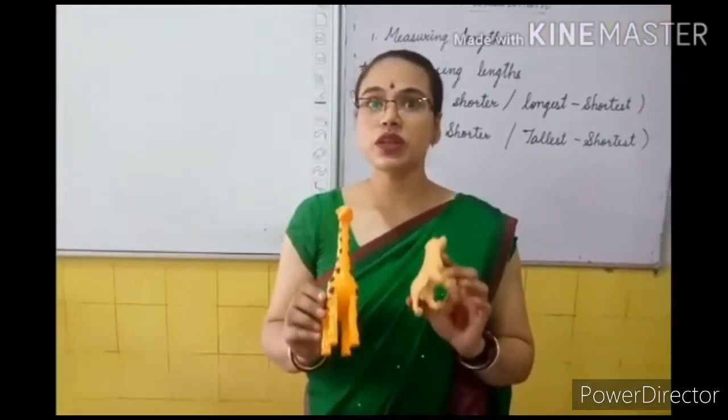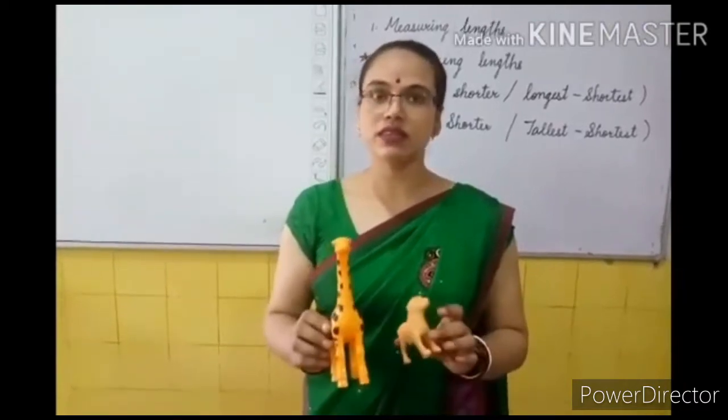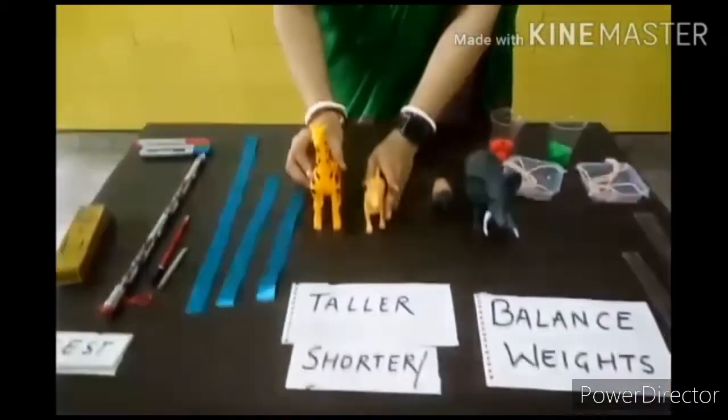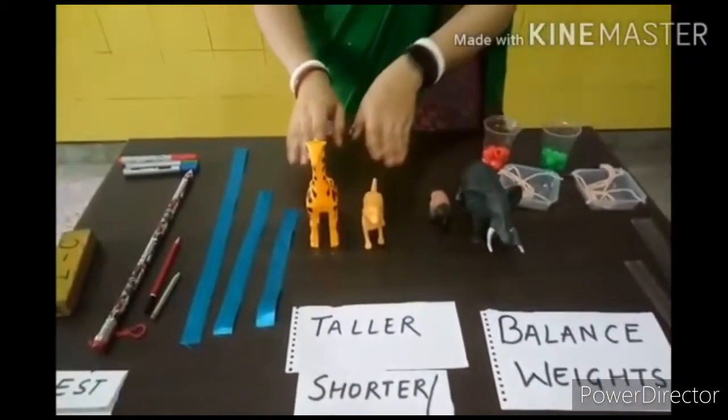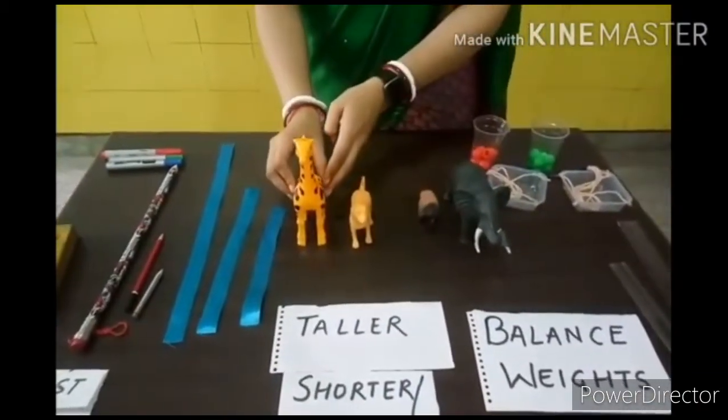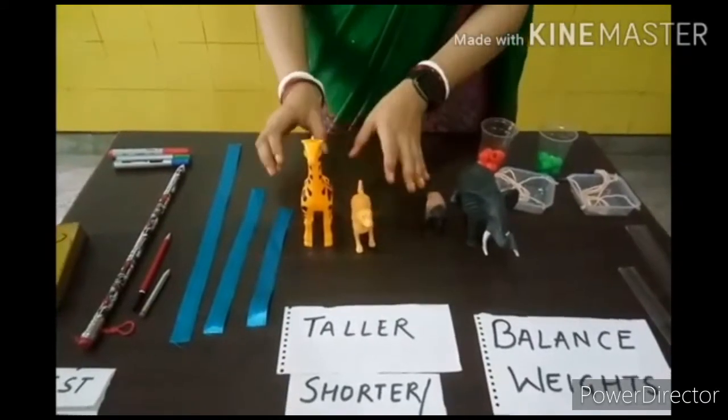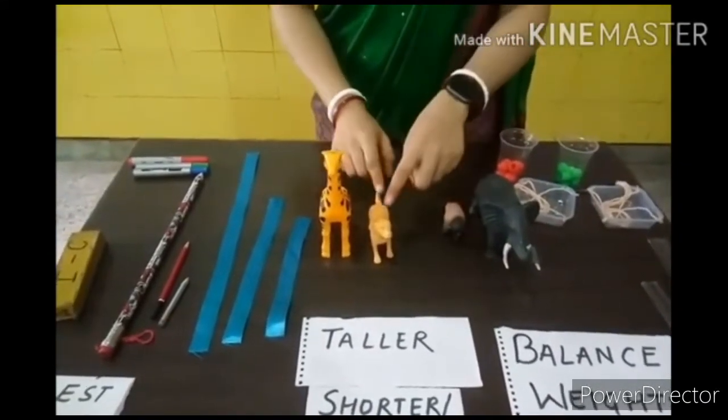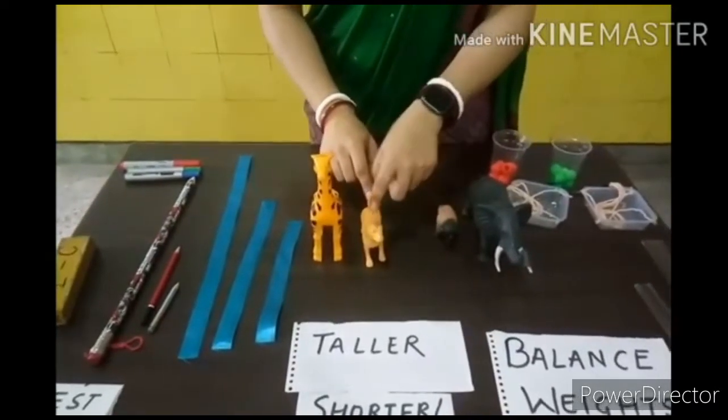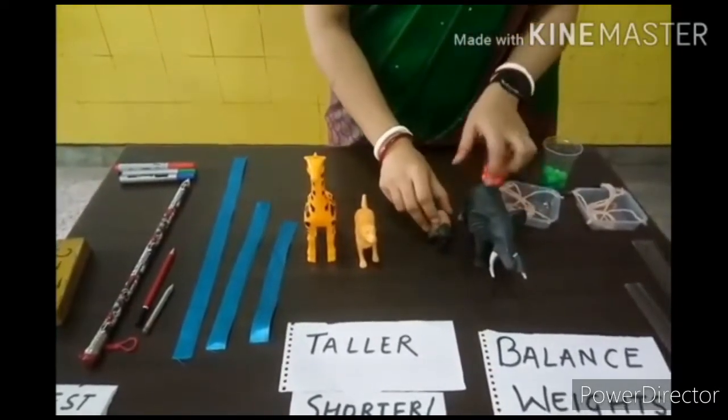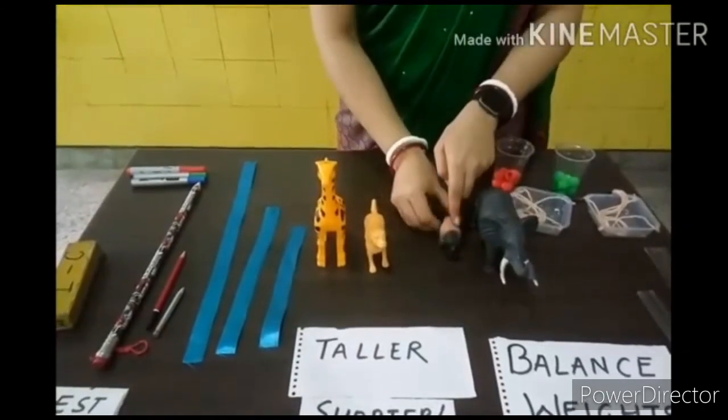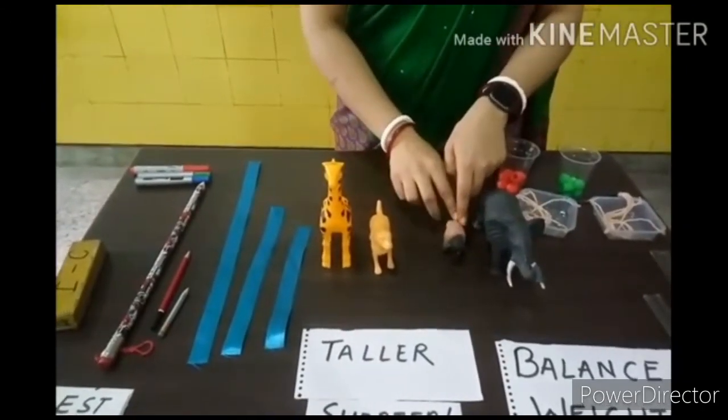Now, students, we will learn the comparison with the help of these animals. See, there are two pairs of animals kept here. This is giraffe and this is dog. What you can see in this pair, the giraffe is the taller and dog is shorter. Similarly, you can see in this pair of animals, elephant is the taller one and sheep is the shorter one.